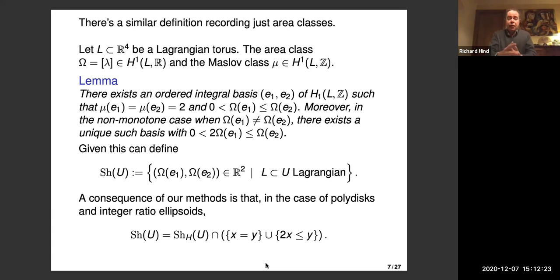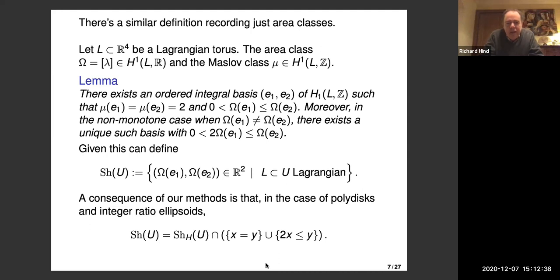The general shape is a subset of the Hamiltonian shape. One inclusion is clear: the Hamiltonian shape is a subset of the general shape. But our methods show that the same obstructions you get for Hamiltonian isotopies, you get for general Lagrangians, so this also answers that question.